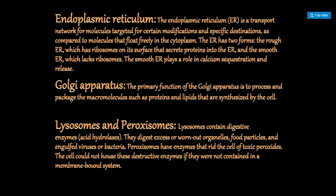Smooth ER lacks ribosomes on its surface and plays a role in calcium secretion and release. Inside the cell there exists a membranous network enclosing a fluid-filled lumen called the endoplasmic reticulum. Rough ER contains ribosomes on its surface and synthesizes protein. Smooth ER has no ribosomes and is responsible for secreting lipids. The function of ER is that it forms a supporting skeletal framework for the cell.